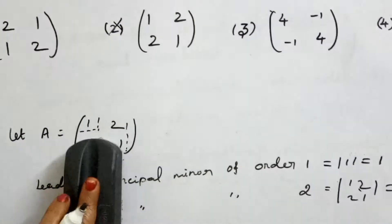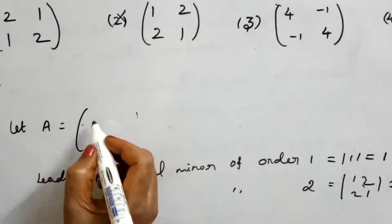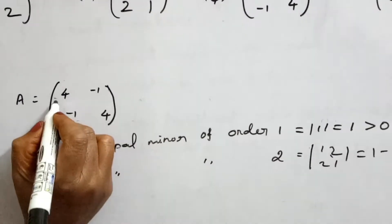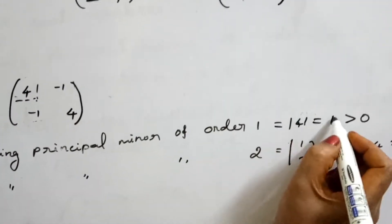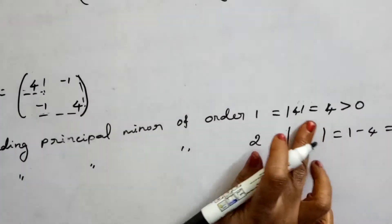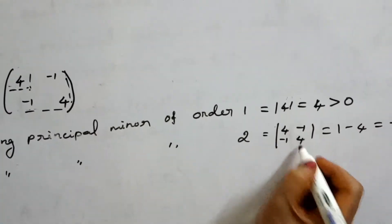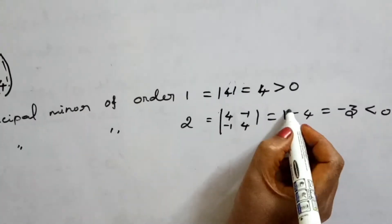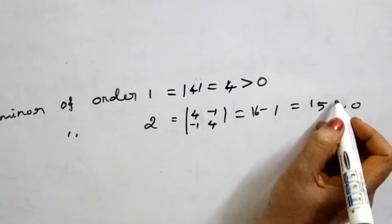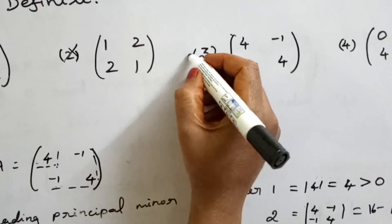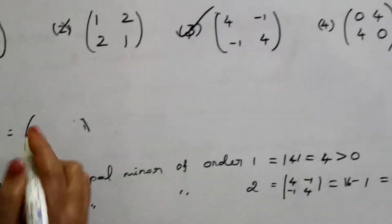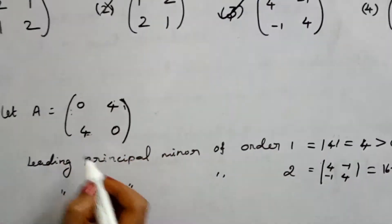Now the third option: matrix [[4, -1], [-1, 4]]. This is a symmetric matrix. The leading principal minor of order 1 = 4, which is greater than 0. The leading principal minor of order 2 = det([[4, -1], [-1, 4]]) = 16 minus 1 = 15, which is greater than 0. Both minors are greater than 0.